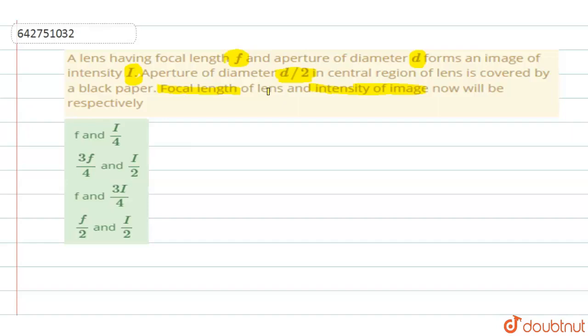So it is closed - half of the diameter is closed. So when diameter decreases to half, what happens to its area?